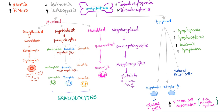Here is my famous hematopoiesis slide. If you have fewer red blood cells, this is anemia. Lots of red blood cells, this is polycythemia vera. Fewer white blood cells, this is leukopenia. Lots of white blood cells, this is leukocytosis.